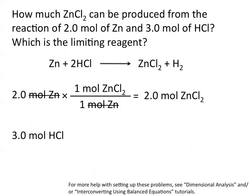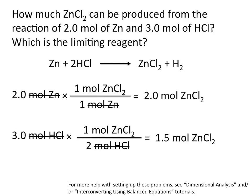Now let's look at how much zinc chloride can be made from the three moles of hydrochloric acid that we start with. Again, we use the coefficients in our balanced chemical equation, which tell us that for every one mole of zinc chloride produced we need two moles of hydrochloric acid. This tells us that with three moles of hydrochloric acid and excess zinc, 1.5 moles of zinc chloride could be produced. From these calculations, three moles of hydrochloric acid can at most produce 1.5 moles of zinc chloride, and this is our theoretical yield.